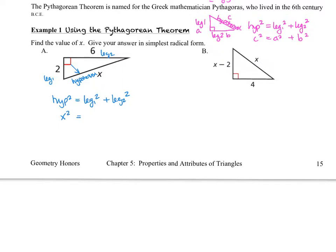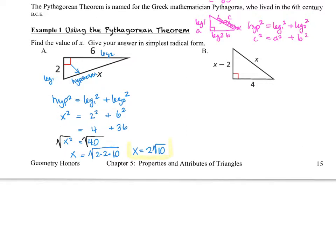We substitute in. Since the hypotenuse in our example is labeled X, we have X squared equals 2 squared plus 6 squared. 2 squared is 4, 6 squared is 36, so X squared equals 40. We take the square root of both sides and end up with X equals 2 root 10, since 40 equals 4 times 10. If you don't remember how to simplify radicals, definitely come in for extra help or go to math lab, because this is a skill from Algebra 1 that is very important.